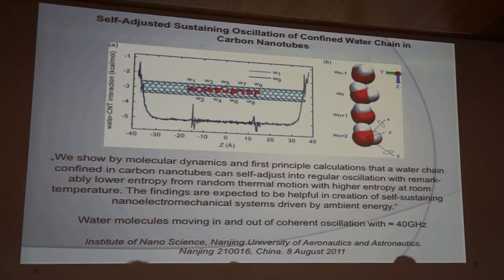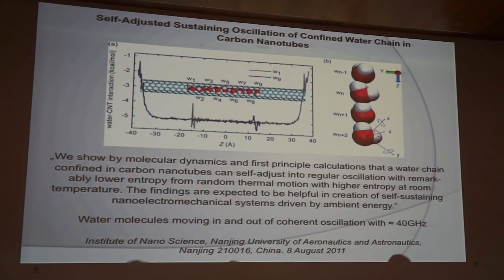Another oscillatory effect playing a role in the cell is the self-adjusted sustaining oscillation of confined water chains in nanospaces here, for example, in the carbon nanotube. What you see here is a carbon nanotube and a chain of water molecules, and if that is the case, they most likely can move into a coherent oscillation, and this coherent oscillation lasts only for a very short time it runs into a chaotic oscillation again, and this moving in and out of coherence has a frequency of about 40 gigahertz. We show by molecular dynamics and first principle calculations that a water chain confined in carbon nanotubes can self-adjust into regular oscillation with remarkably lower entropy from random thermal motion with higher entropy at room temperature. The findings are expected to be helpful in creation of self-sustaining electro-mechanical systems driven by ambient energy.